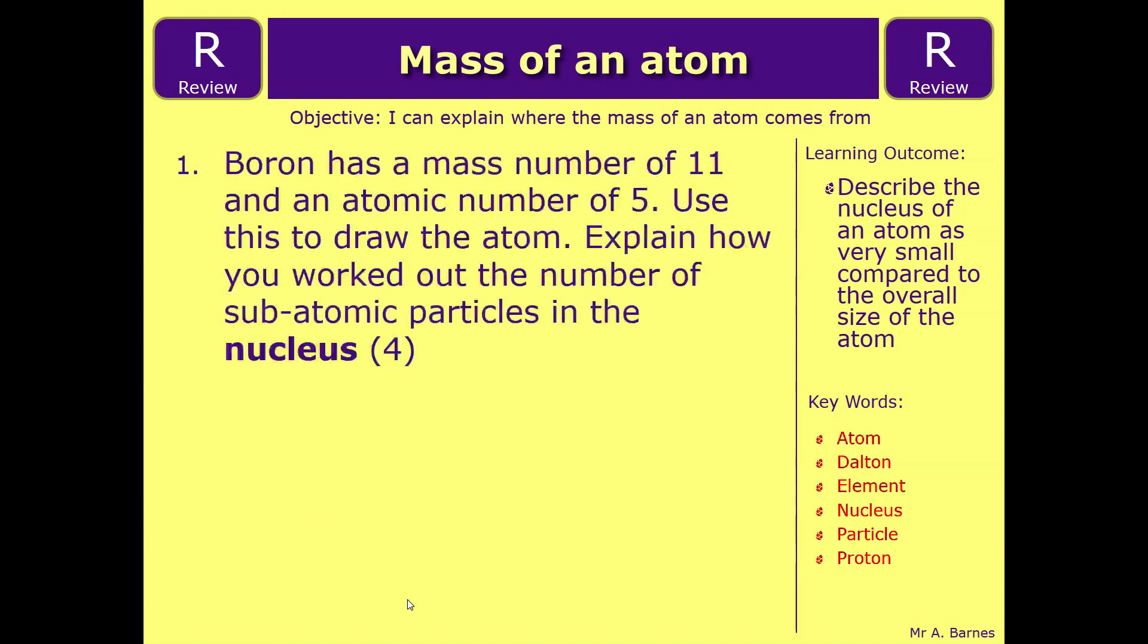And the review question is, Boron has a mass number of 11 and an atomic number of 5. Use this to draw the atom and explain how you worked out the number of subatomic particles in the nucleus. Have a go at that, and let me know if you need any help.